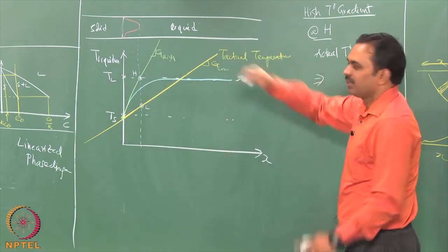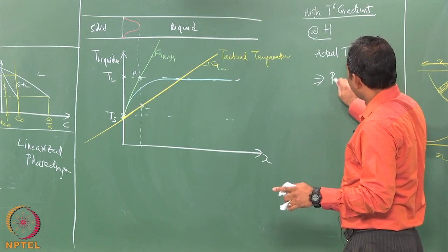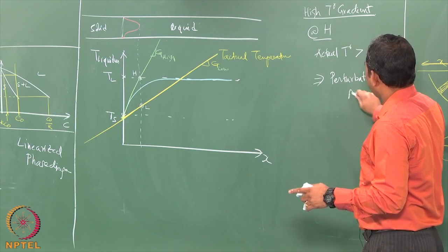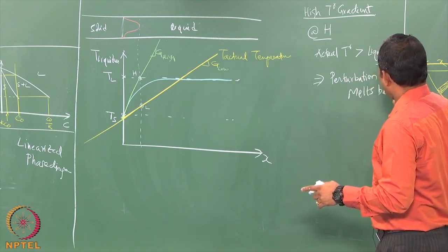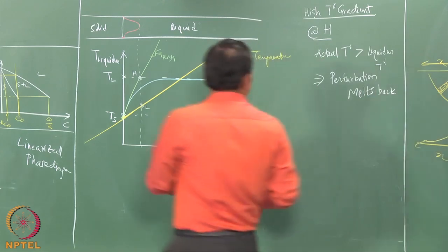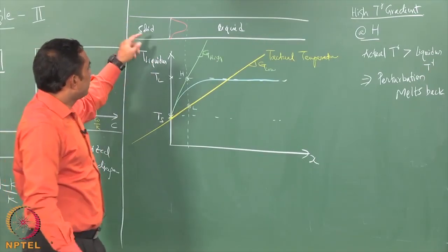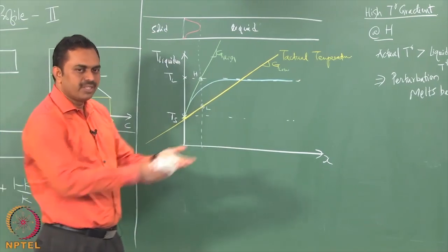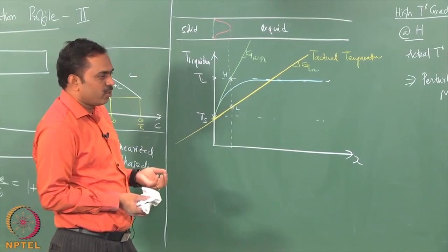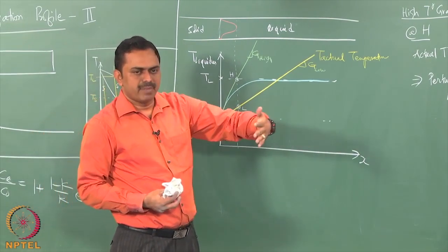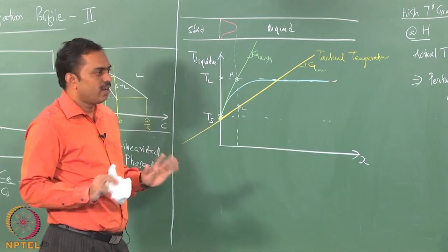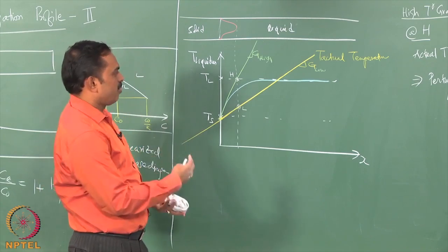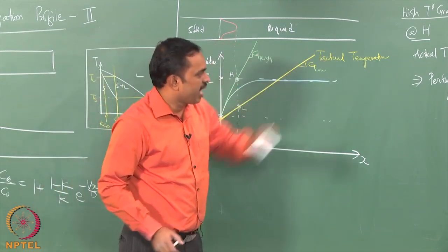So it means the bump or perturbation melts back. This means the front between the solid and liquid is going to be flat — the growth of grains from the fusion zone is going to be in a flat manner. That means the microstructure will not be cellular or dendritic. It will have flat grains and will also be columnar in nature. That is what we mean by a high gradient.